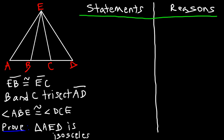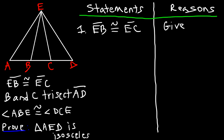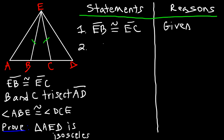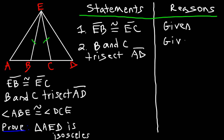Let's start with what we're given. Statement one: segment EB is congruent to segment EC — that's given. Mark it on the diagram: EB and EC. Statement two: points B and C trisect segment AD — also given.